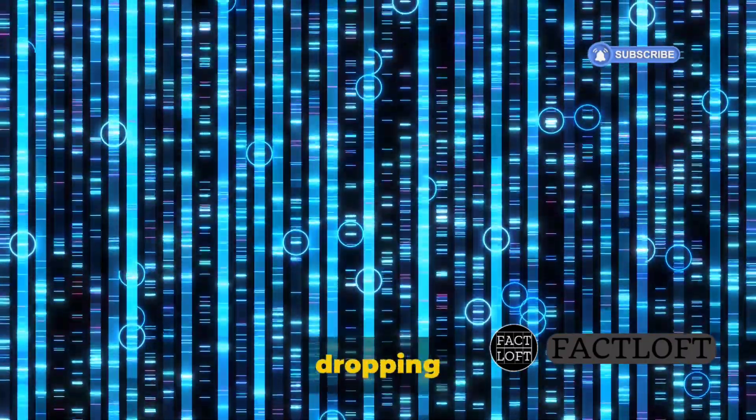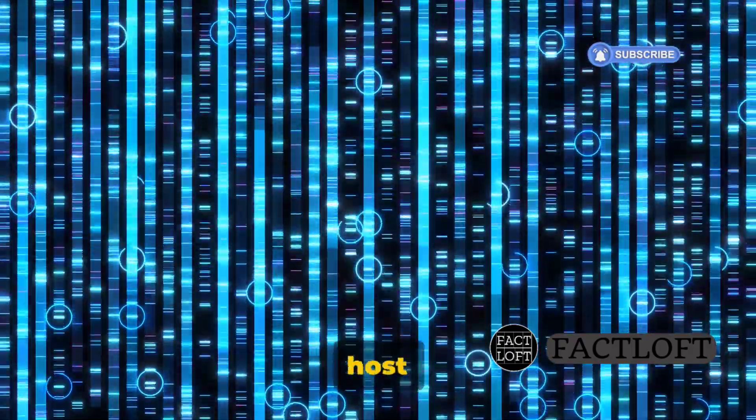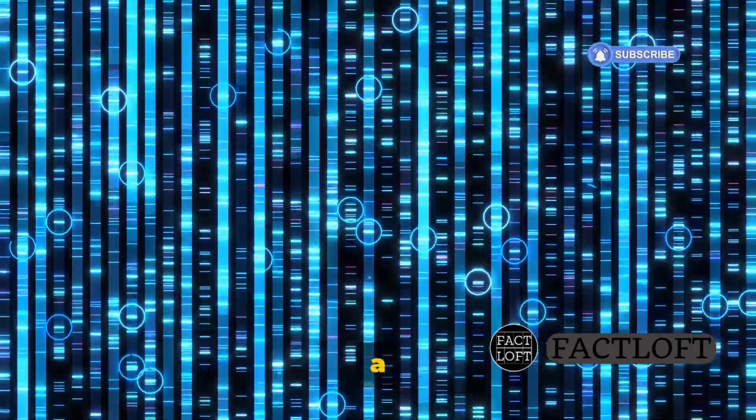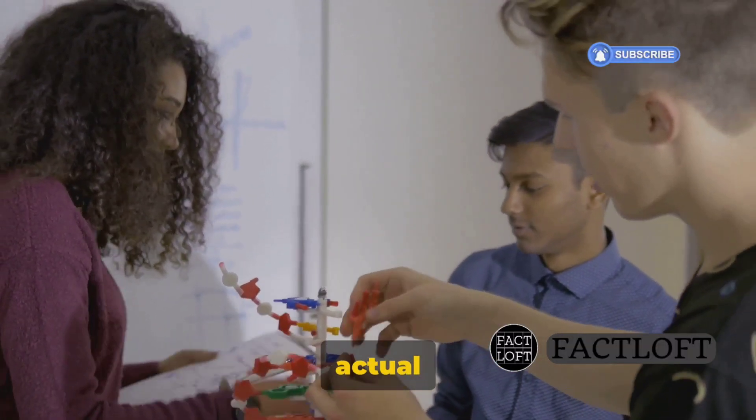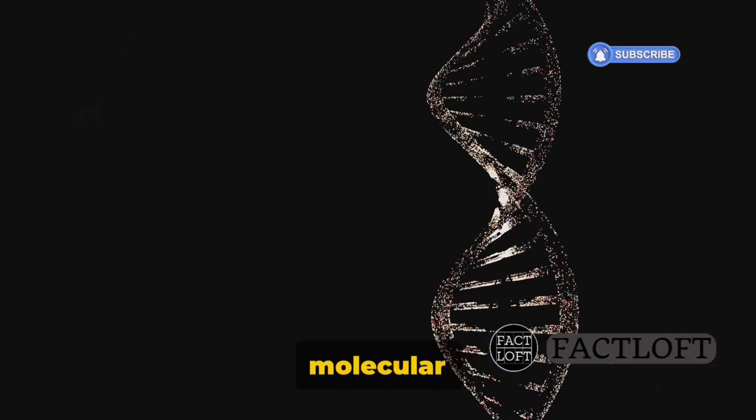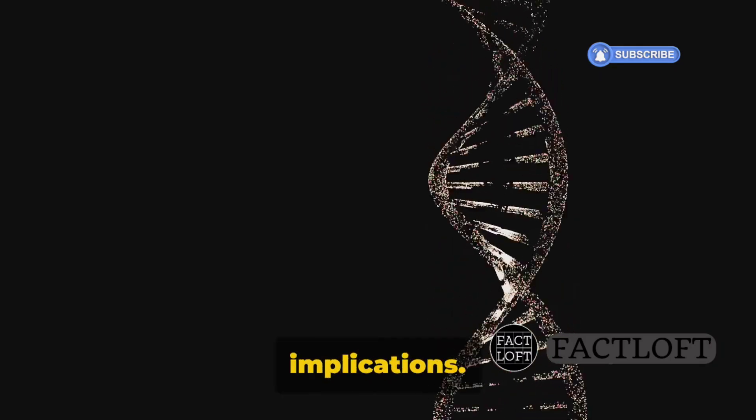But it's not as simple as just dropping off a package. The vector has to integrate the gene of interest into the host organism. It's like embedding a secret message into a letter. Now this is a simplified explanation. The actual process is like a high-stakes game of molecular Jenga, involving much more detail and precision. It's a world where even the tiniest slip could have huge implications.